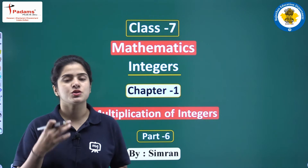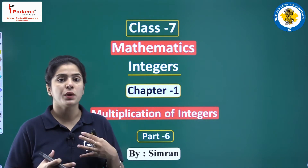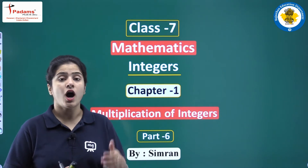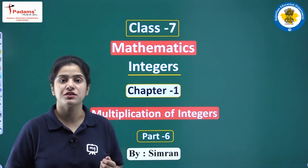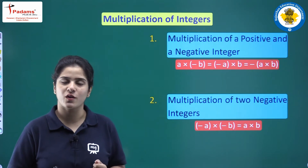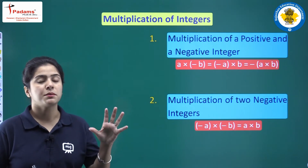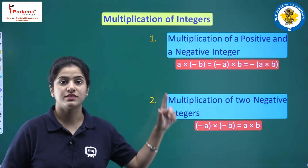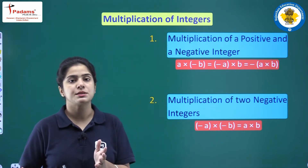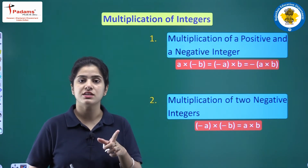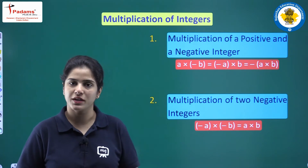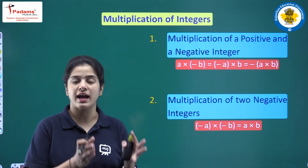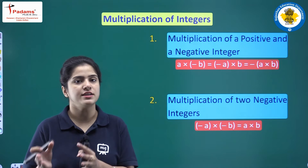Today we'll be doing the introductory part of this exercise — how can we multiply different integers? The first part is when you are multiplying a positive integer and a negative integer: multiplication of a positive integer and a negative integer.